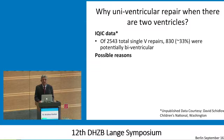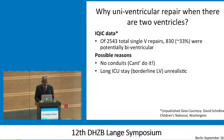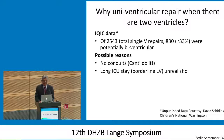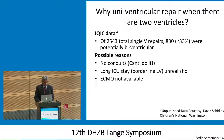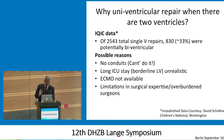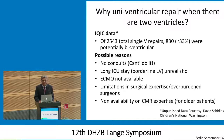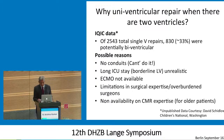So why univentricular repair when there are two ventricles? In the IQIC data, it is quite depressing that 33% of patients who were actually capable candidates for two-ventricle repair were subjected to single-ventricle repair. Possible reasons include: conduits not being readily available, long ICU stay concerns, borderline LV with tight ICU resources, no ECMO availability, genuine limitations in surgical expertise, overburdened surgeons, and non-availability of CMR expertise — particularly for older patients when determining exact volumes. These are all real-world limitations, so you end up going down the easy pathway.